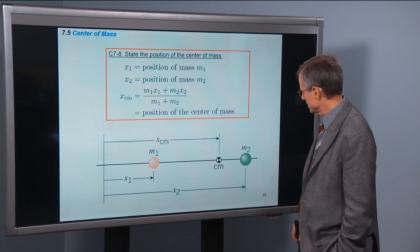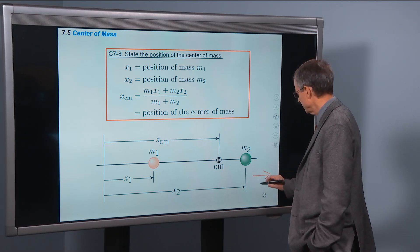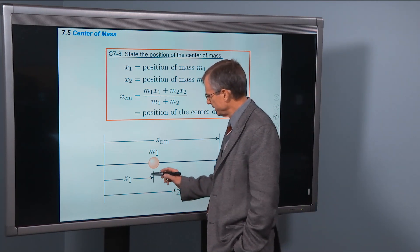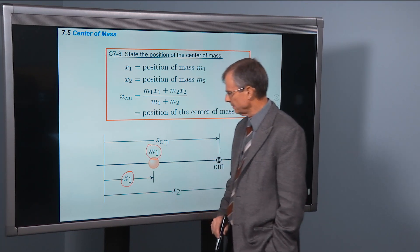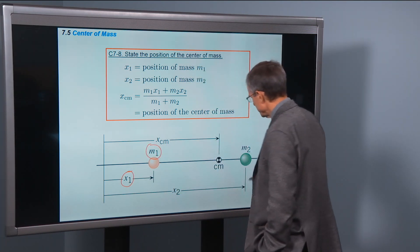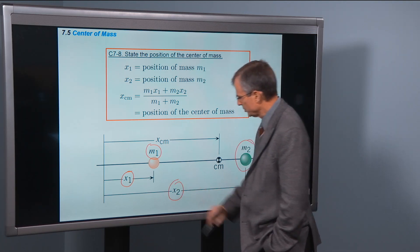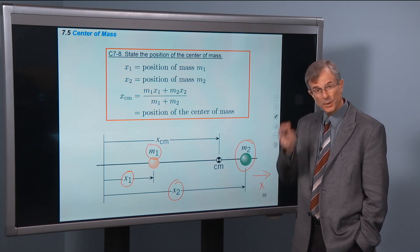If we have two masses and we have an x-direction toward the right, we have the position of mass one, call it x-one, and the position of mass two, call it x-two. We want to know where the center of mass is between those two.